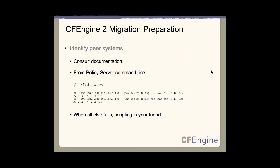So, if you want to plan your upgrade, you'd want to identify peer systems. If you don't already document, run the CF Show command on your policy server. If you have more than one policy server, run it on each. If you're using CF Run, you can also check out the CF Run host file as well, just so you know what your peer systems are and make sure you get everyone covered. When all else fails, scripting is your friend. By doing something in Perl or Shell, you can always script something up that can find this info for you.